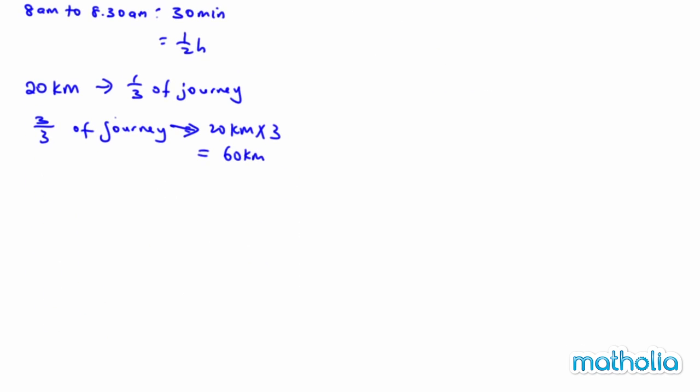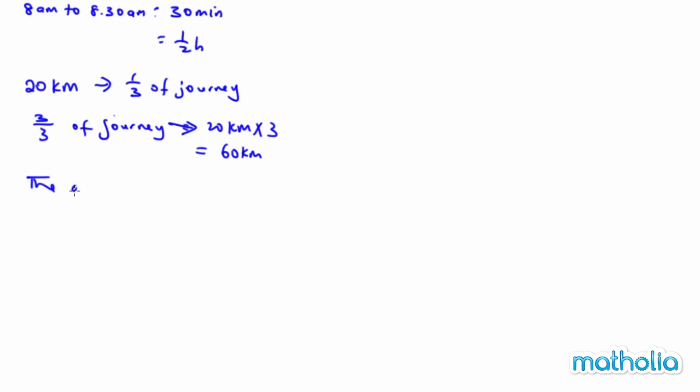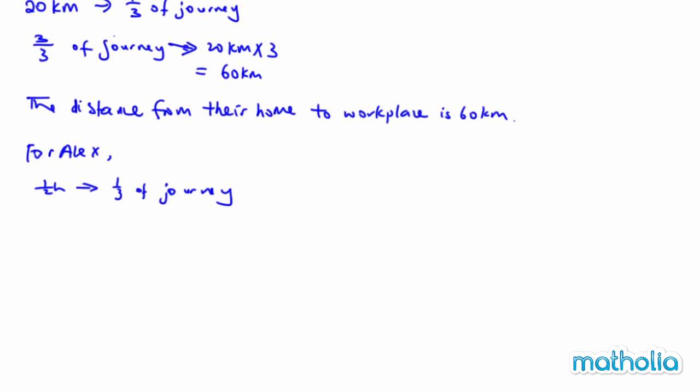So I can conclude saying that the distance from their home to workplace is 60 kilometres. Now for Alex, half an hour represents one-third of journey. So 3 out of 3 of journey represents one-and-a-half hours.